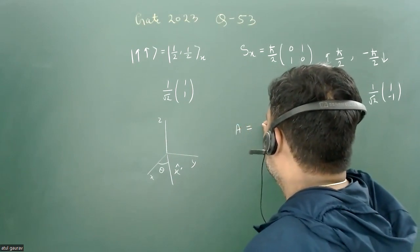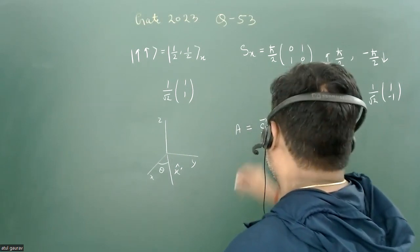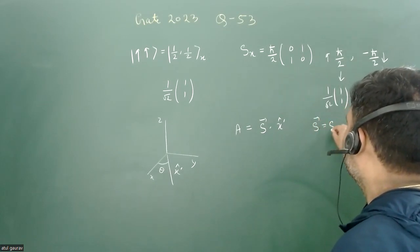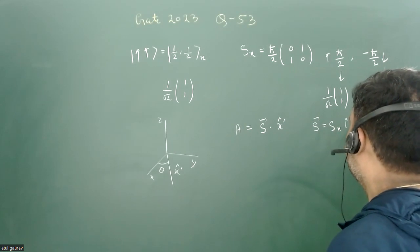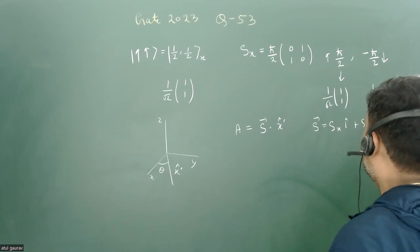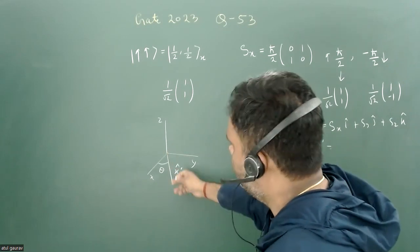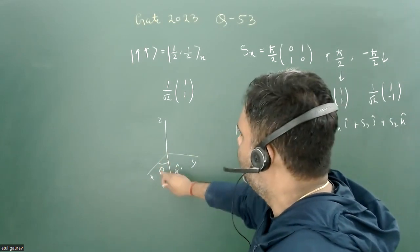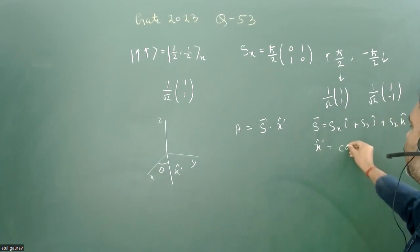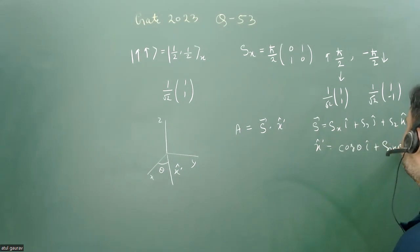The operator A is given by S·x̂', where S = Sx î + Sy ĵ + Sz k̂, and x̂' is the unit vector in the xy-plane making angle θ with the x-axis, so x̂' = cosθ î + sinθ ĵ.